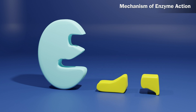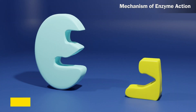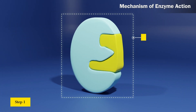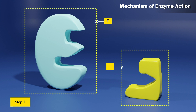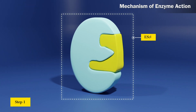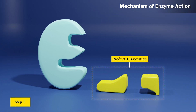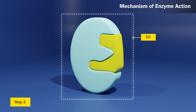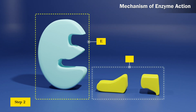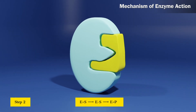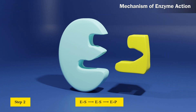Therefore, it occurs in two steps. Step 1: Binding of enzyme to substrate to form an activated complex — E + S gives rise to ES. Step 2: Decomposition of the activated complex to form product — ES gives rise to E + P. Overall: E + S → ES → E + P.